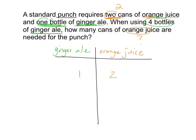What if we don't put any bottles of ginger ale? How many cans of orange juice do you think we're going to need? Zero, because we're not making any punch. As soon as we add one bottle of ginger ale, we need to add two cans of orange juice. So what if I have two bottles of ginger ale? If I'm doubling the number of bottles of ginger ale, I need to double the number of cans of orange juice. What's two plus two, or two times two? That gives us four.